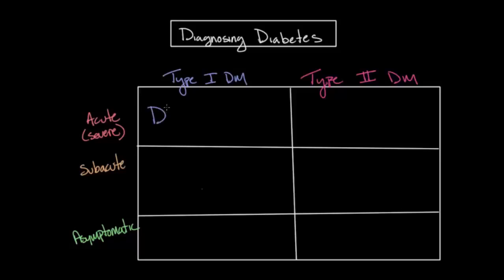In type 1 diabetes, this is known as diabetic ketoacidosis, or DKA for short, and it is how about 30% of individuals with type 1 diabetes will initially present before diagnosis. In type 2 diabetes, the acute presentation is known as hyperosmolar non-ketotic state, or HHNS for short, and it's much less common than DKA, as it's the initial presentation for only about 2% of individuals with type 2 diabetes.